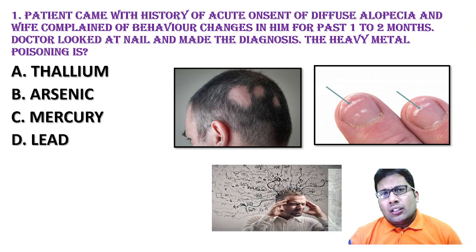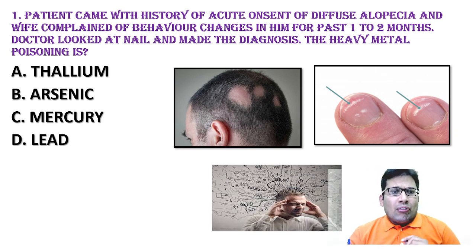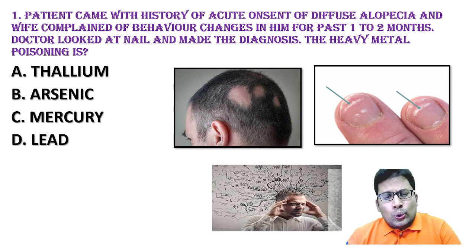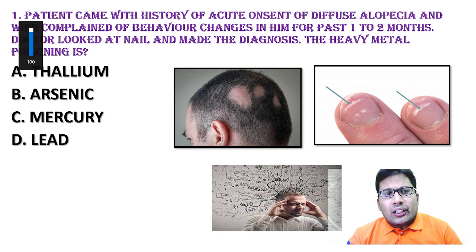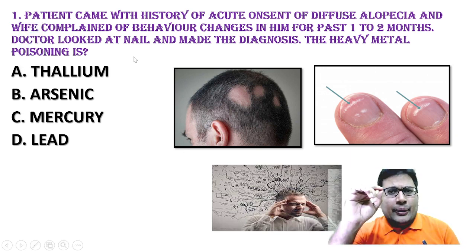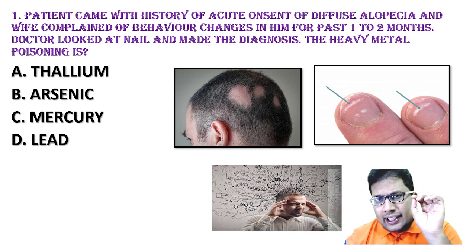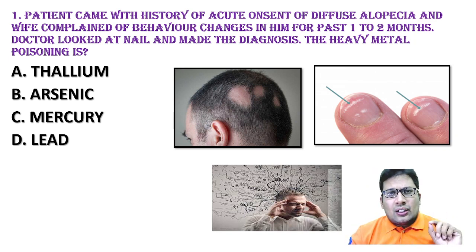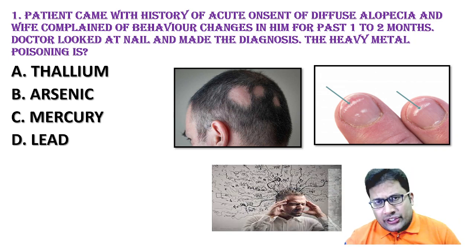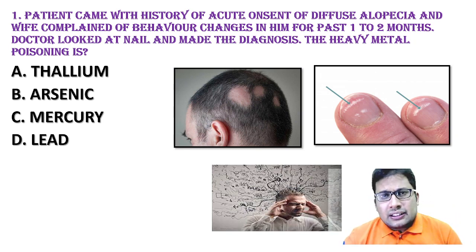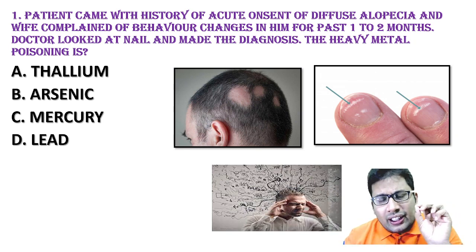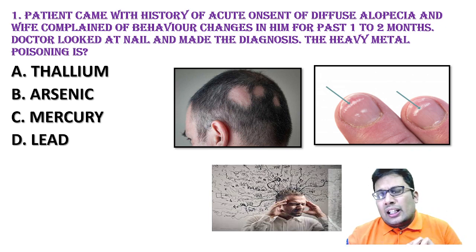Question number one: a patient came with the history of acute onset of diffuse alopecia. The wife complained of behavioural changes in him for the past 1 to 2 months. The doctor looked at the nail and made the diagnosis. The heavy metal poisoning options are thallium poison, arsenic poison, mercury poison, and lead poison. Heavy metal poisoning is very commonly asked in your exam. Arsenic was asked in the last INICET exam — two questions were there.